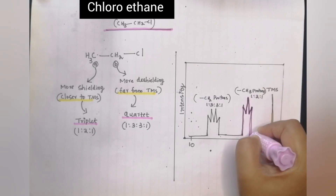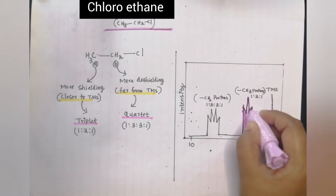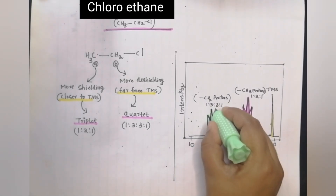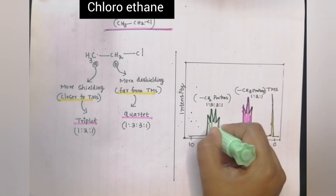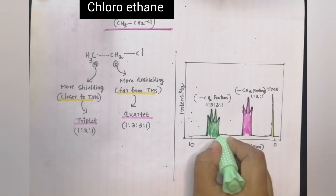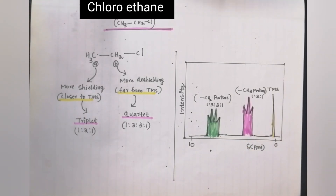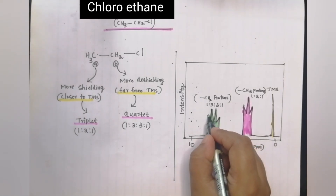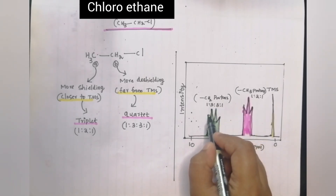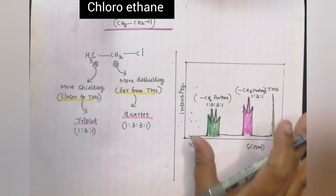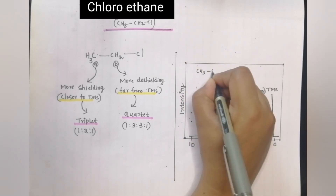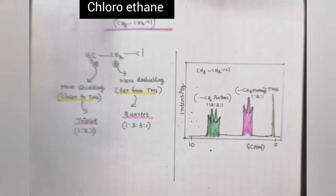Now let's go to the spectrum at different angles. We have to go to the region and mark TMS at 0. TMS is tetramethylsilane, the standard reference compound in hydrogen NMR spectrum. We specify the regions for each signal, with the correct ratio and proportions. The peaks are labeled by name on the side — CH3 triplet in the more shielded region, CH2 quartet in the more deshielded region.